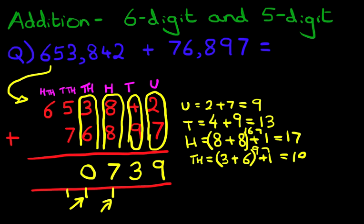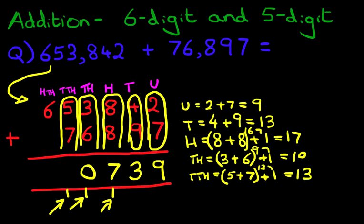Now, we're going to add the ten thousands, which is this column over here. Don't forget, we're carrying one again. We've got ten thousands, and we have five plus seven plus one. Let's put a bracket around the first two. Five plus seven is twelve plus the one is thirteen. Let's write this down. We've got one here, and three here.